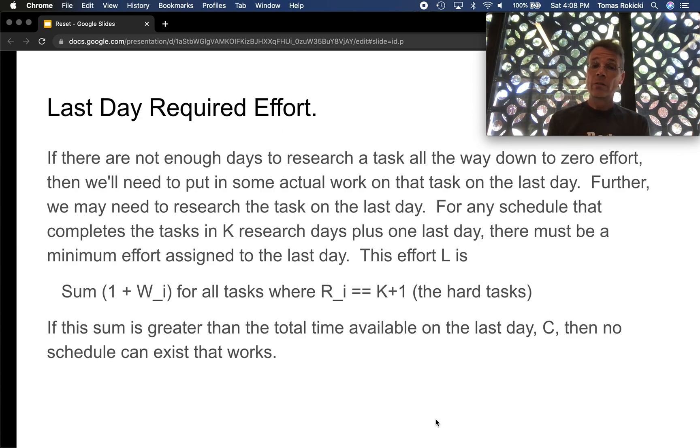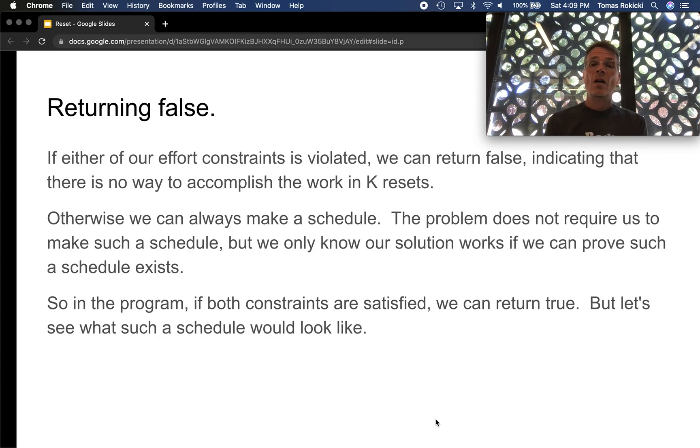Well it's just one for research plus W_i. Remember W_i is leftover work. So the sum of that value 1+W_i for all the hard tasks is equal to something we called L. And this L must be less than or equal to C because otherwise we can't do the remaining work on the last days. No schedule can exist that works. So if either one of these two constraints is violated we can return false. No possible schedule, we need to go to a larger k value. Otherwise it turns out we can always make a schedule.